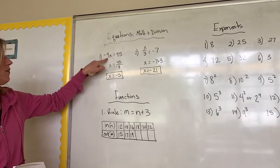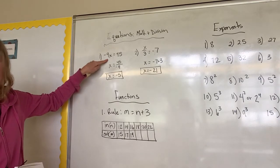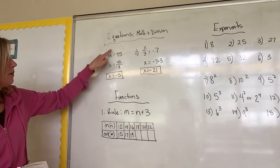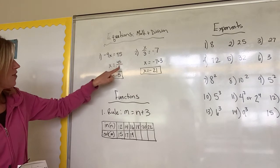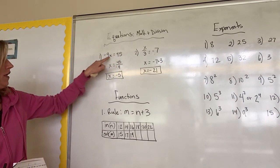So negative 9 times what, because remember it sits right by each other it means multiply, equals 45. So I'm going to take my negative 9 to this side. That means 45 divided by negative 9. Inverse operation, it's multiplying over here so we divide over here.